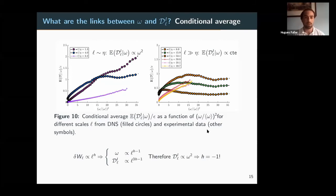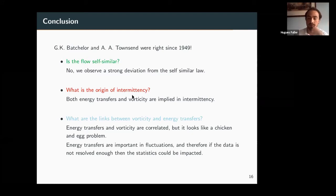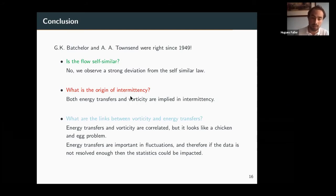To answer the original questions: the flow is not self-similar — this was known from structure functions. More precisely, both phenomena postulated by Batchelor and Townsend are linked to intermittency: energy transfers and vorticity together, not just one of them. Looking deeper at their links, they are correlated but not strongly — it is a chicken-and-egg problem. Fluctuations in energy transfers are also very important. Keep in mind that your data must be very well resolved so that statistics are not impacted by low resolution.